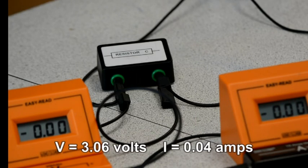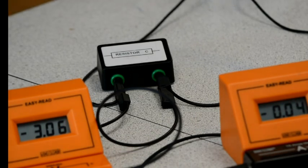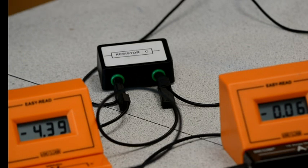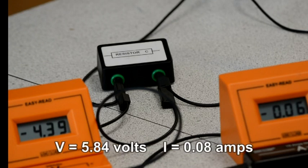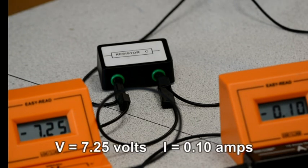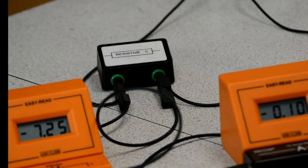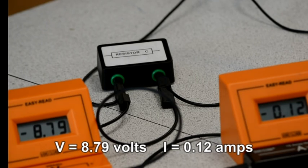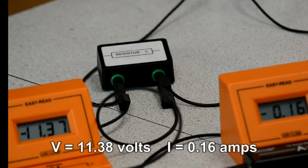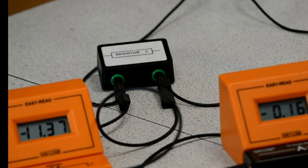3.06 volts, 0.04 amps. 4.39 volts, 0.06 amps. 5.84 volts, 0.08 amps. 7.25 volts, 0.10 amps. 8.79 volts, 0.12 amps. 11.38 volts, 0.16 amps.